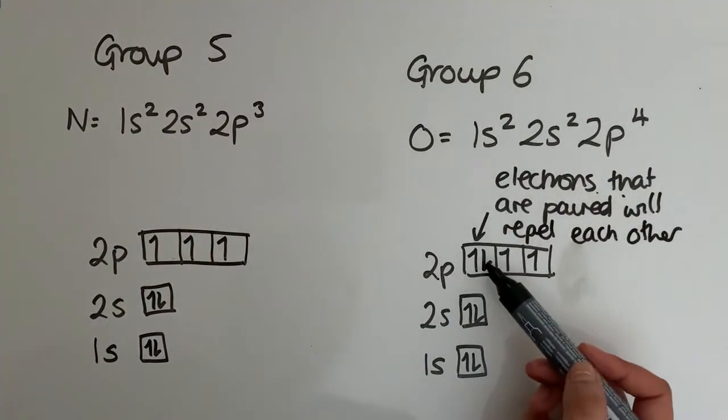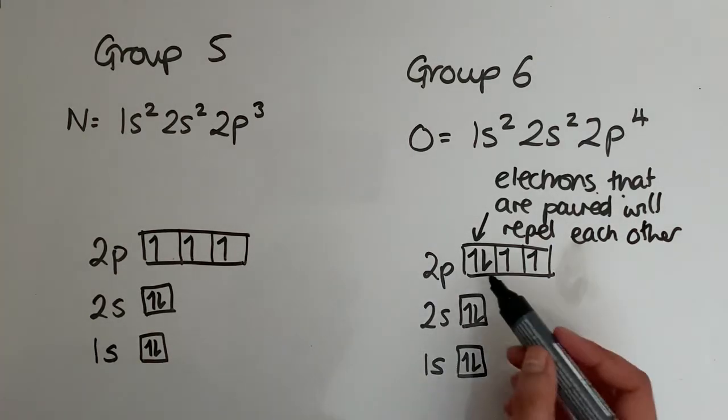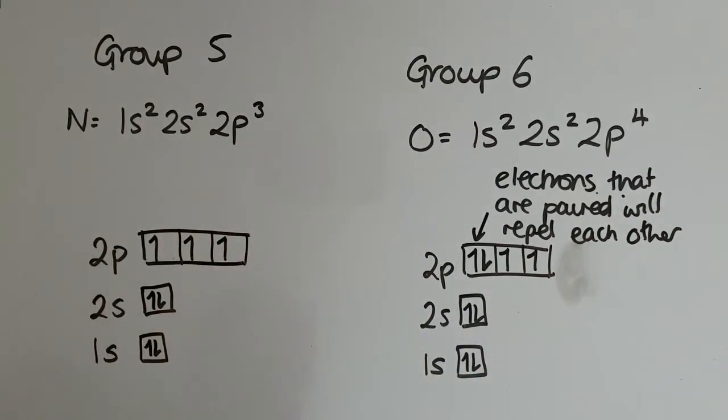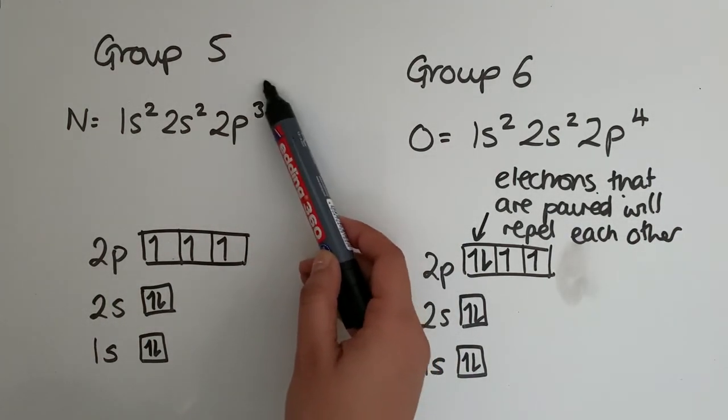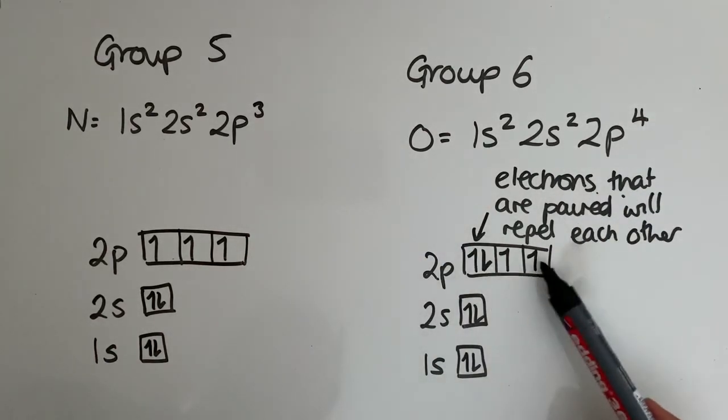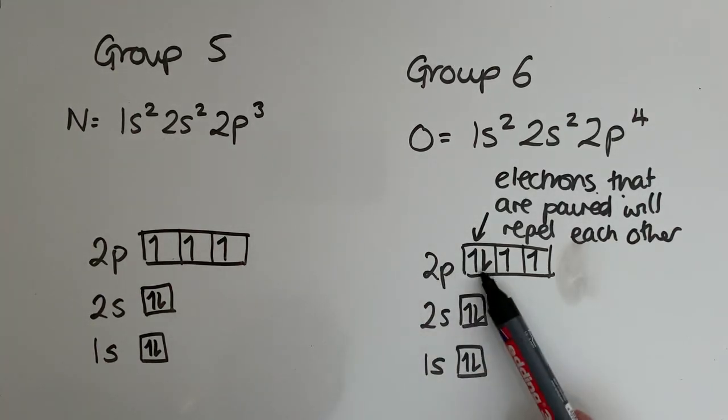Therefore, this electron here requires less energy to remove. Because of the pairing, this electron wants to run away. These electrons here, they're pretty happy the way they are. And that is why you have that dip going from group five to group six. All group five elements are going to end in p³. All group six elements are going to end in p⁴. So they will all have this configuration in the outermost p subshell. And because of the pairing that you have in p⁴, this one requires less energy to remove.